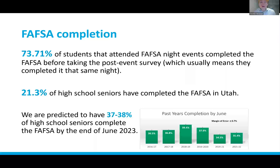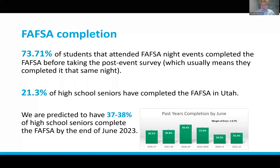We had a post-event survey and over 1,000 students have filled it out to date. 73.71% of those students said they were able to complete the FAFSA, with most completing it immediately after the event. As of right now, 21.3% of high school seniors have completed the FAFSA in Utah, and we're projecting 37 to 38%, which is up from last year. Thank you everyone for your work helping students with that.